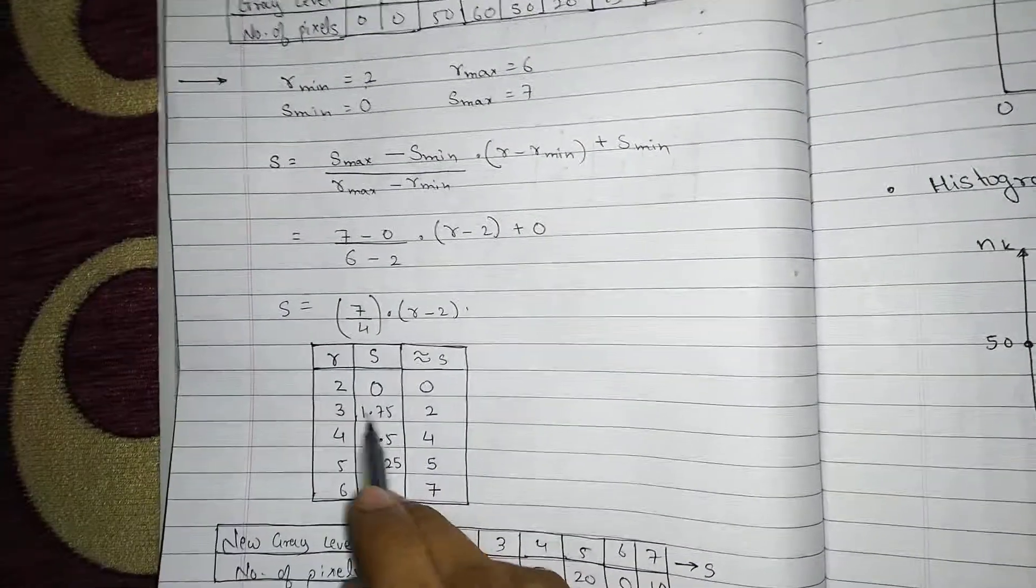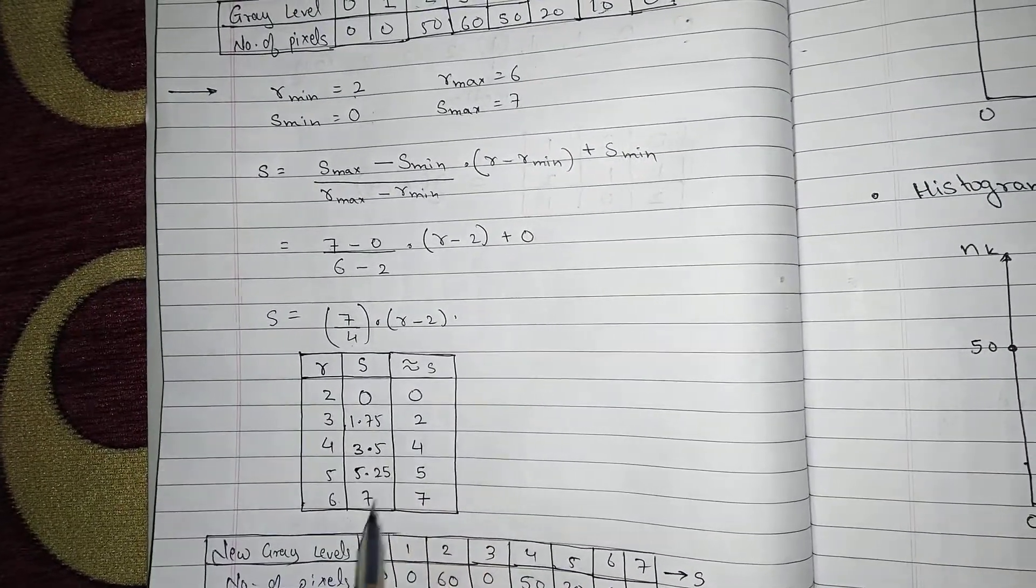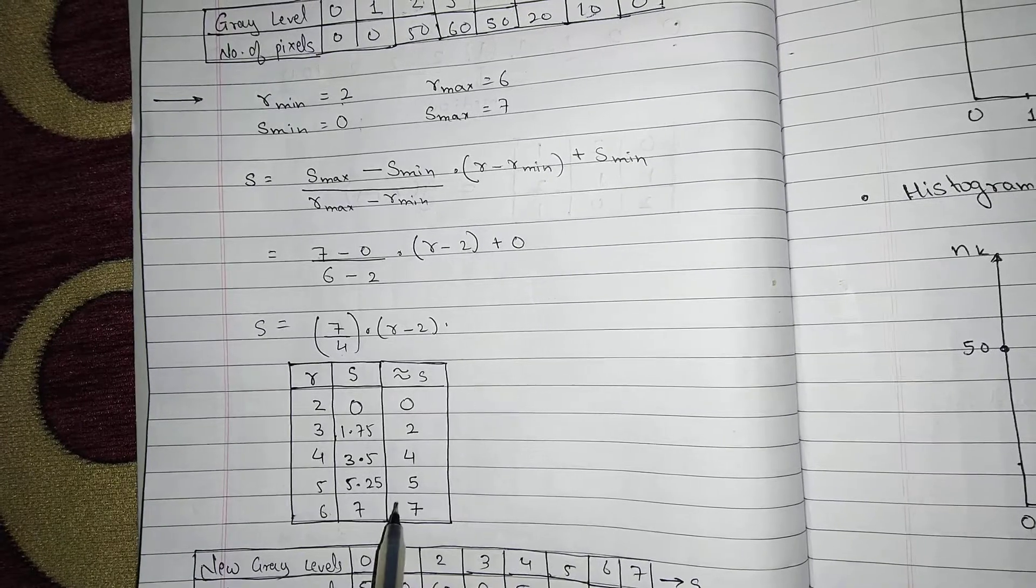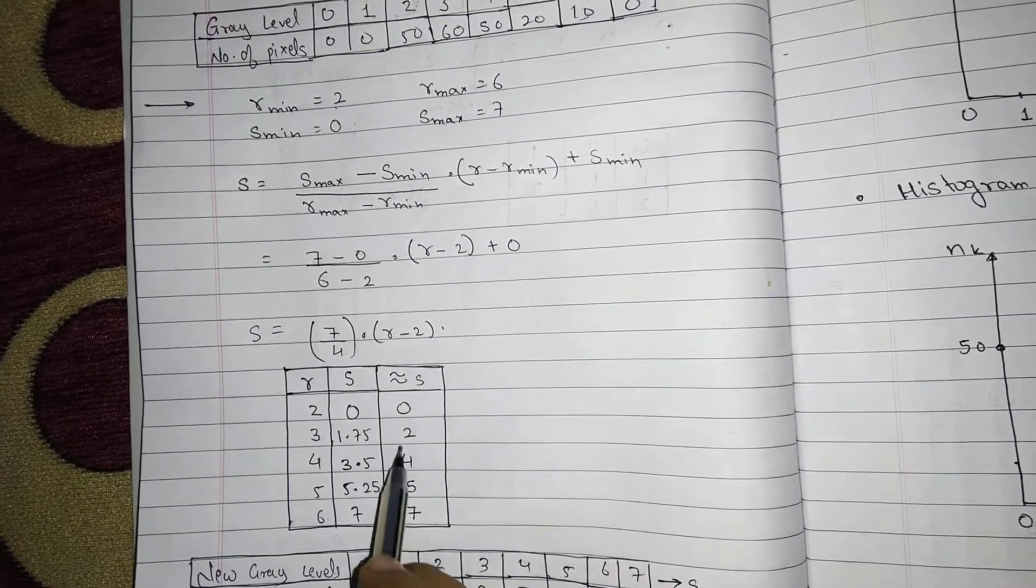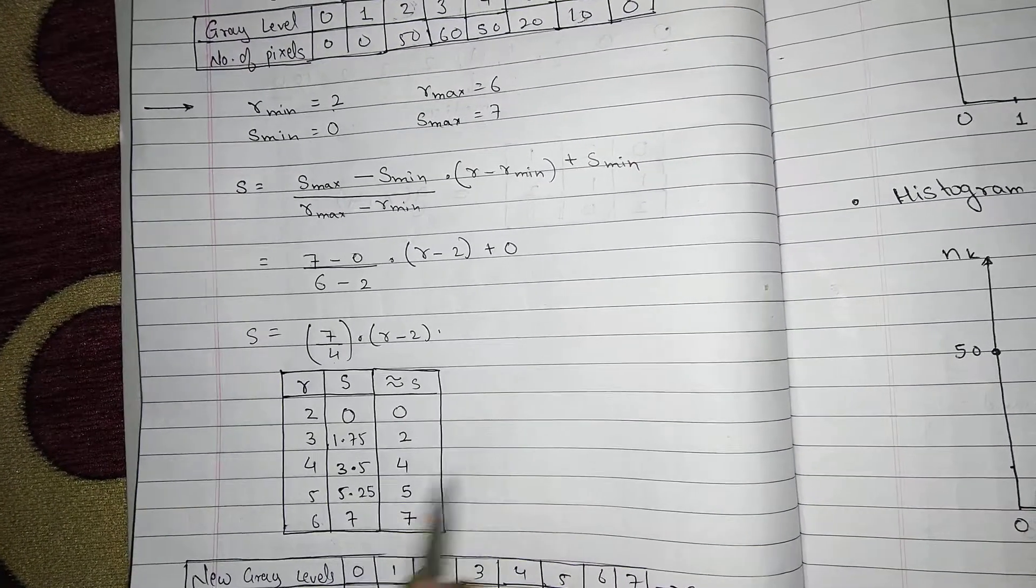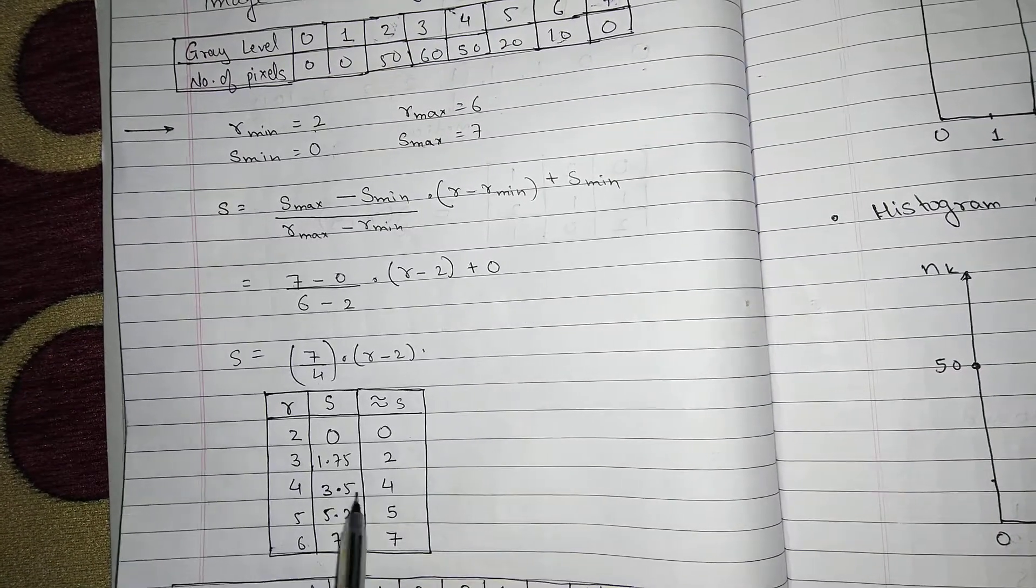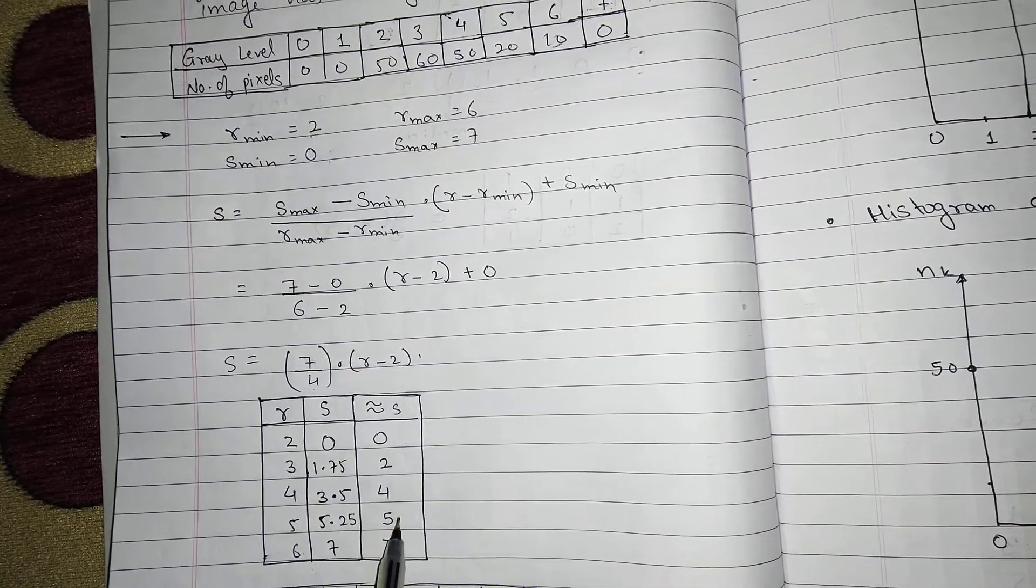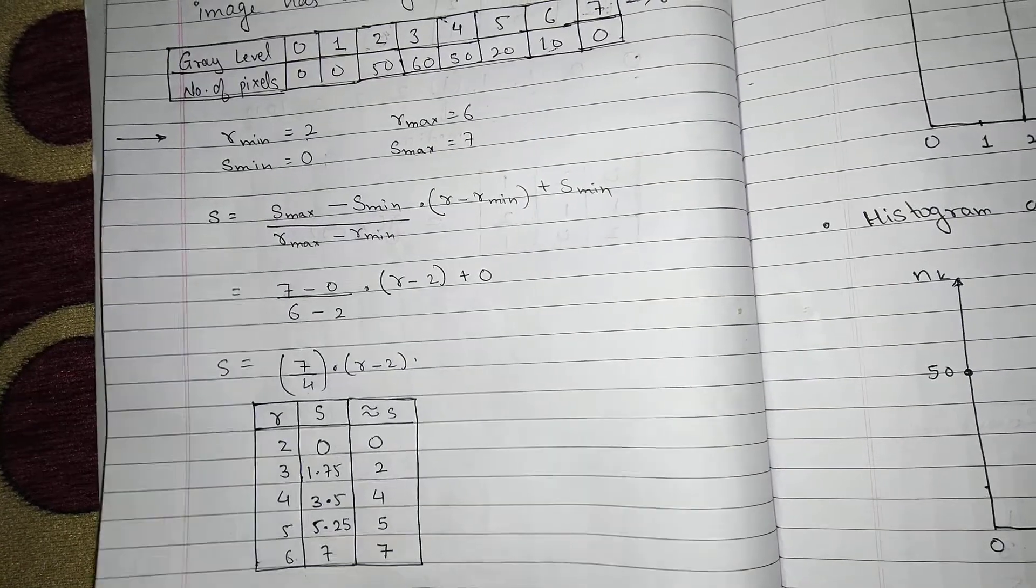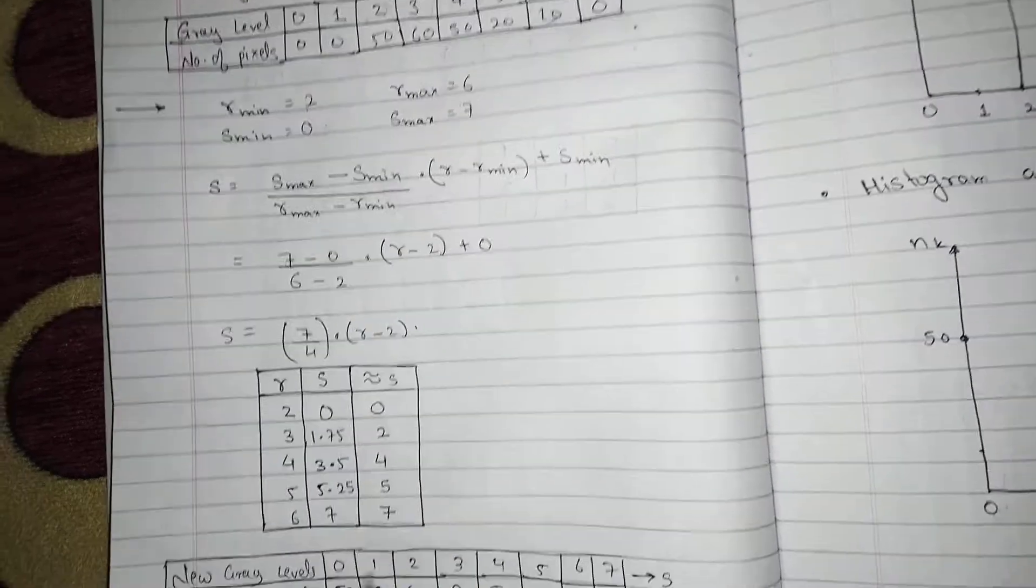We get 0, 1.75, 3.5, 5.25 and 7. As told in the previous video anything above 0.5 will be rounded off. So 0 will remain 0, 1.75 will be 2, 3.5 will be 4, 5.25 will be 5 and 7 will be 7.